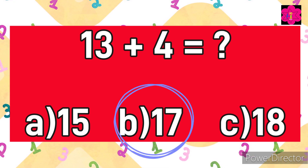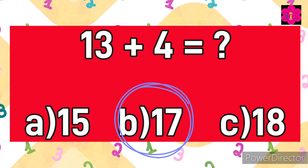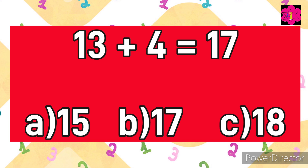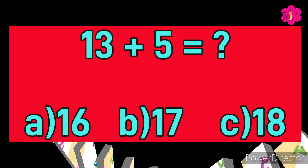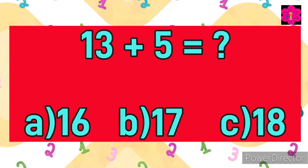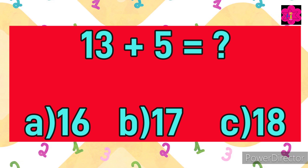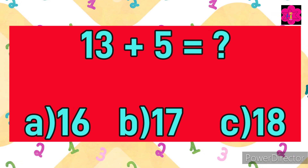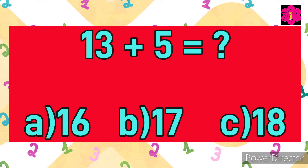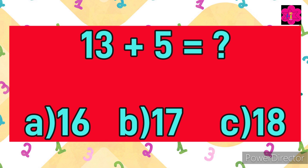Good job kids! The correct answer is B) 17. 13 plus 4 is equal to 17. Next sum: 13 plus 5 is equal — your options are A) 16, B) 17, and C) 18. Your time starts now!